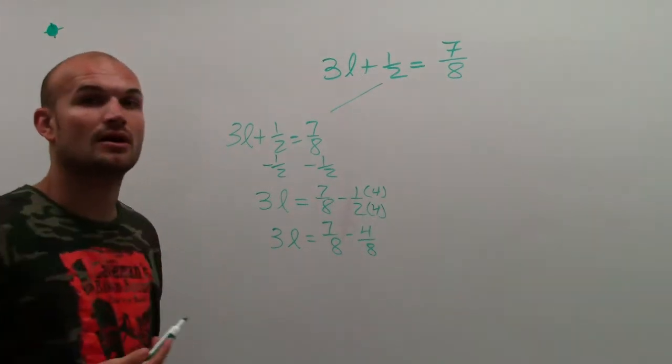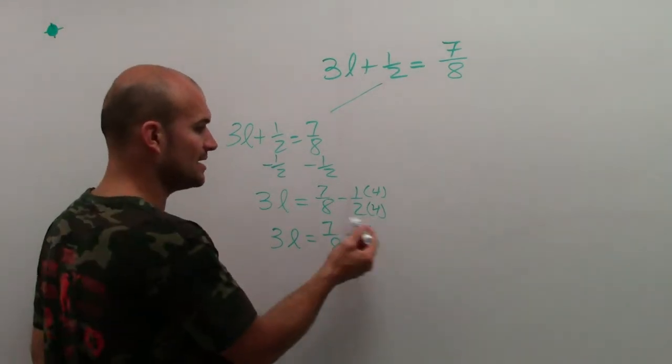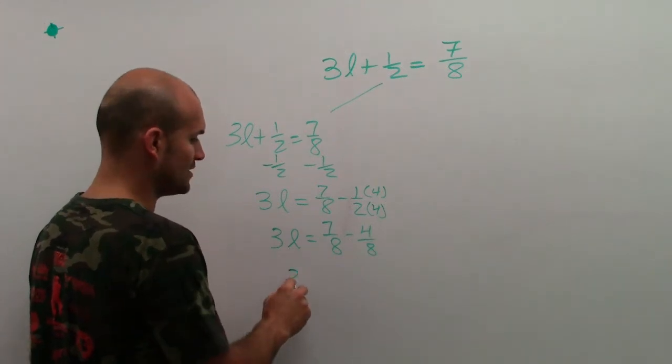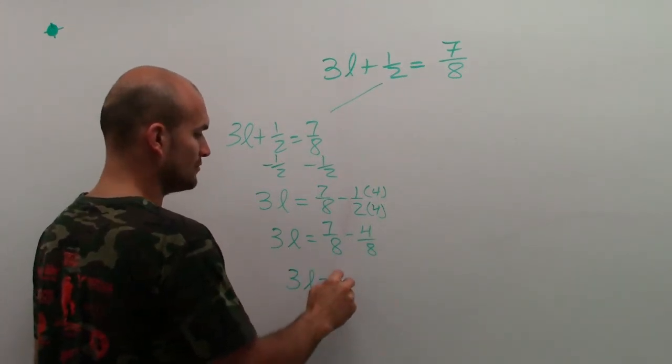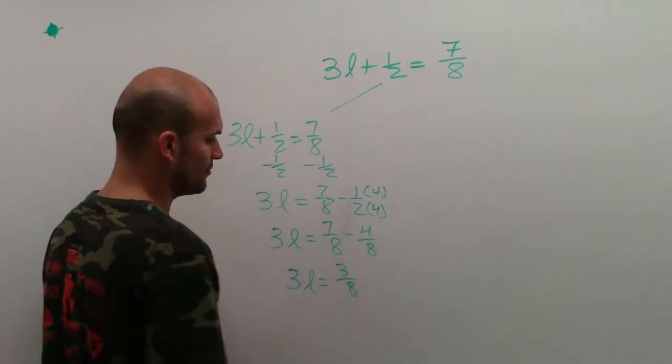When you subtract or add fractions with the same denominator, you keep the denominator same, just subtract the numerator. So I have 3L equals 3 eighths.